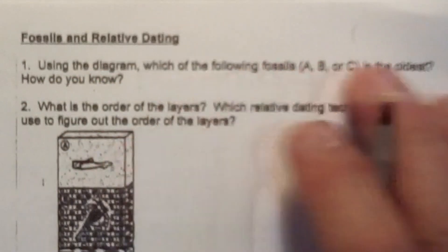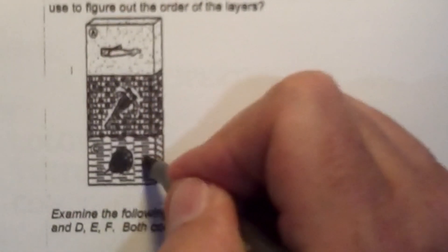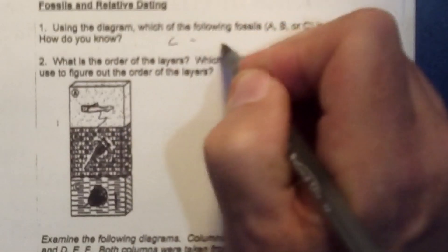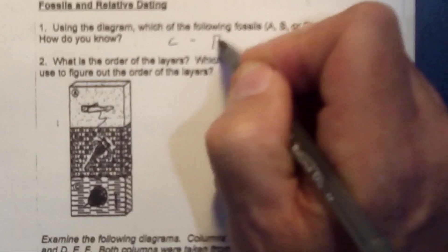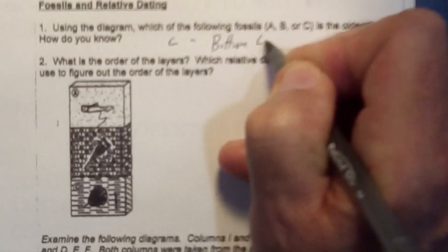Using the diagram, which of the following fossils is the oldest and how do you know? Well, if I were to number this, this would be 1, 2, 3. So the oldest would be C. And it's located on the bottom, it's the bottom layer.